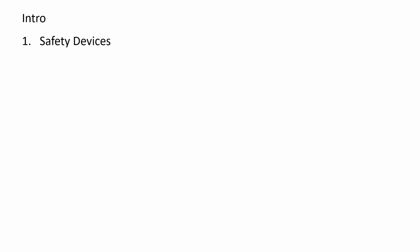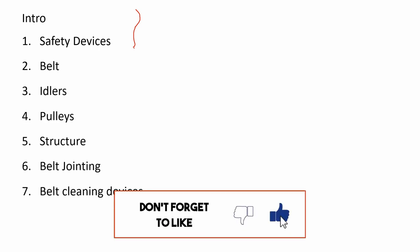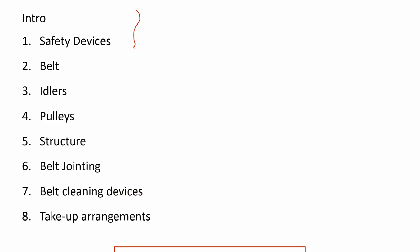First, let's see the three parts we are going to cover. Part one: introduction. Part two: safety devices — which we will cover in this video. We will cover: what is the belt, idlers, pulleys, structure, belt jointing, belt cleaning devices, and take-up arrangements.